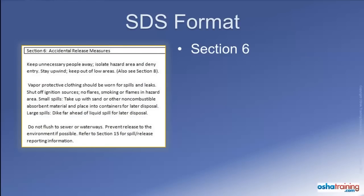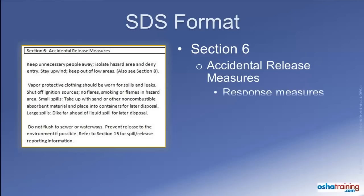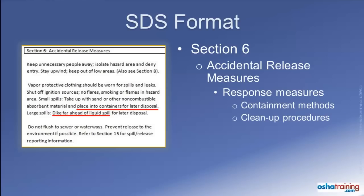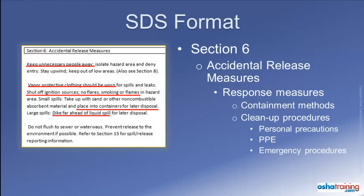Section 6 of the Safety Data Sheet provides the manufacturer's recommendations for responding to spills, leaks, or accidental releases of their product. This could include response measures for containment and cleanup methods to prevent or minimize exposure for response personnel. This may include specific recommendations for protecting personnel from hazards such as sources of ignition or lack of ventilation, recommended personal protective equipment to prevent contamination during the response, emergency procedures, and instructions for evacuation of response personnel and others located nearby.